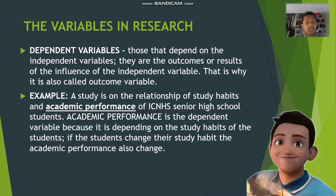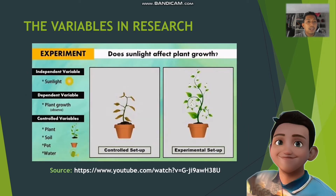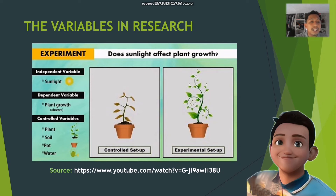If students change their study habits, their academic performance will also change. Similarly, in the sunlight experiment, the dependent variable is plant growth. In the controlled setup there is limited sunlight exposure, while in the experimental setup there is good sunlight exposure. You can observe the dependent variable — plant growth — across both setups.